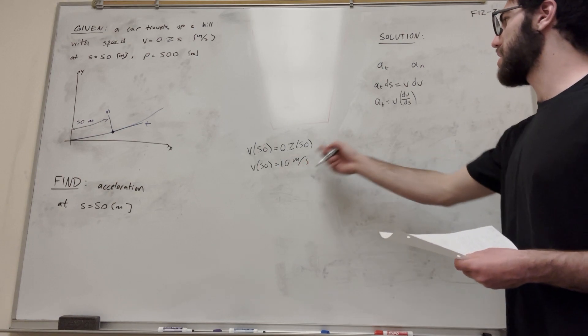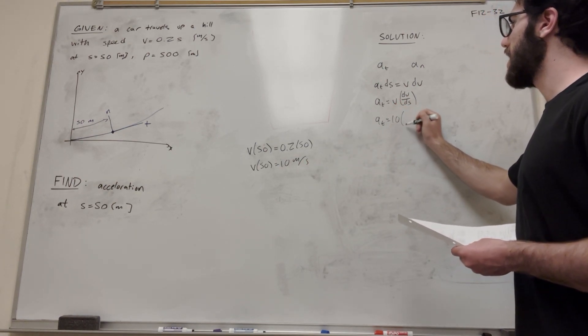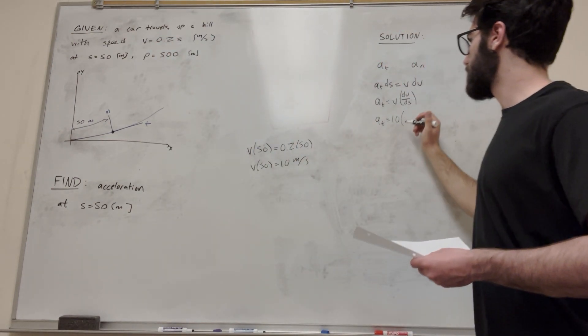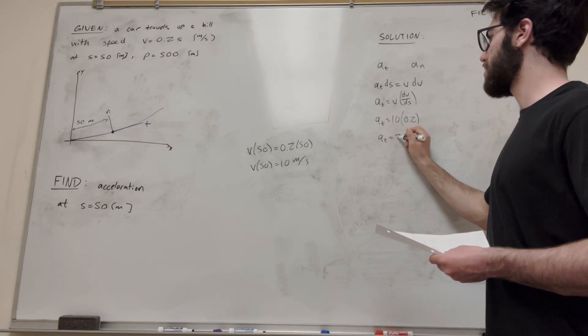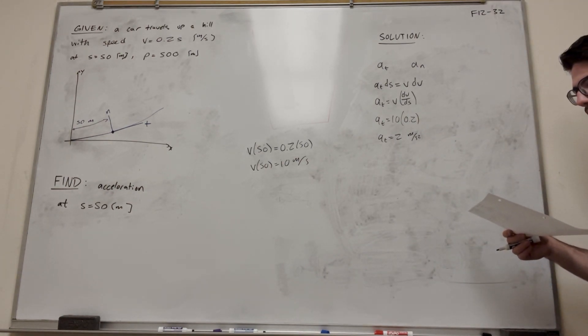So then we have this, so let's plug it in here. Acceleration tangent is equal to 10, and then dv/ds. Let's take the derivative of velocity with respect to s. That s is just going to get dropped and it's just going to be 0.2. So we're going to get that acceleration tangent is equal to 2 meters per second squared. All right, nice.